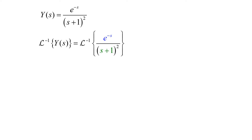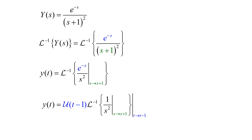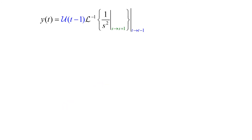So y(t) is going to equal the inverse Laplace of e to the negative s over s squared, translated from s to s plus 1. Using the second translation theorem, e to the negative s gives us a Heaviside function of t minus 1, and it will translate the overall result from t to t minus 1. So y(t) equals the Heaviside function of t minus 1, times the inverse Laplace of 1 over s squared, translated from s to s plus 1, and then translated from t to t minus 1.